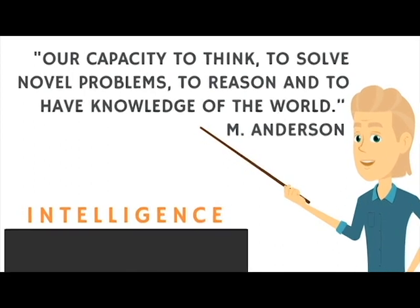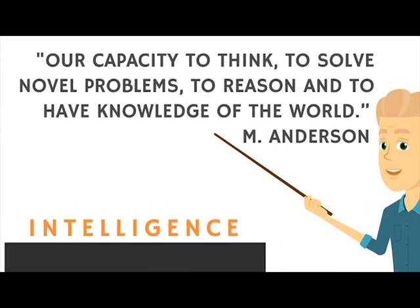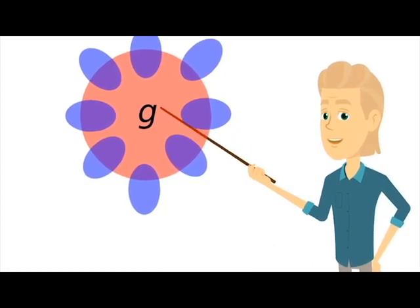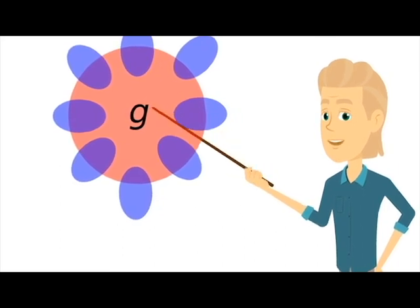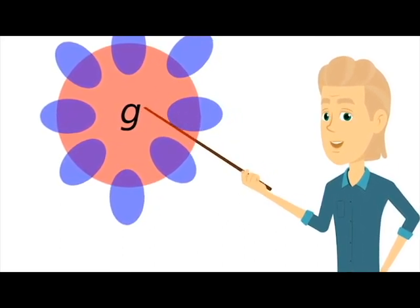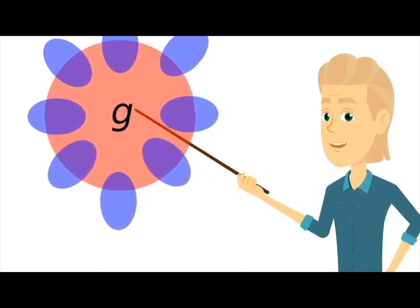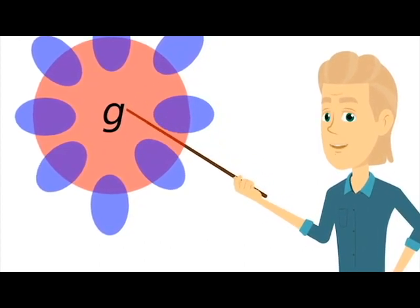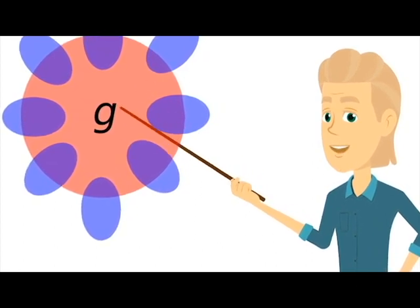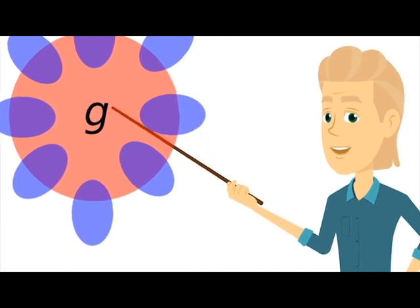IQ Mindware's G-code training is designed to increase general intelligence. So what is general intelligence? Here's one well-known definition from cognitive psychology: our capacity to think, to solve novel problems, to reason and to have knowledge of the world. From a scientific point of view, general intelligence needs to be measured, and the science of measuring cognitive abilities is called psychometrics. While people have different cognitive strengths and weaknesses in language, math or music, correlations between measures of these abilities show us there's an underlying common component to all of them. This is called the G-factor, or G, short for general intelligence.